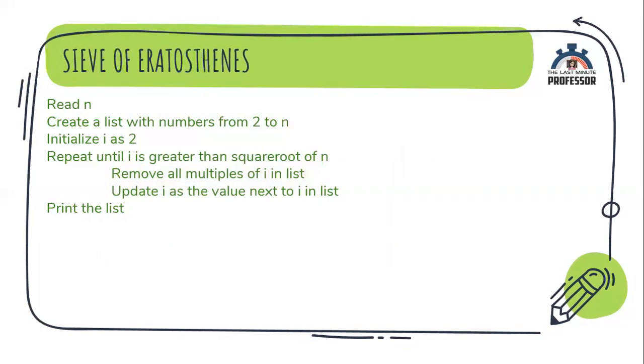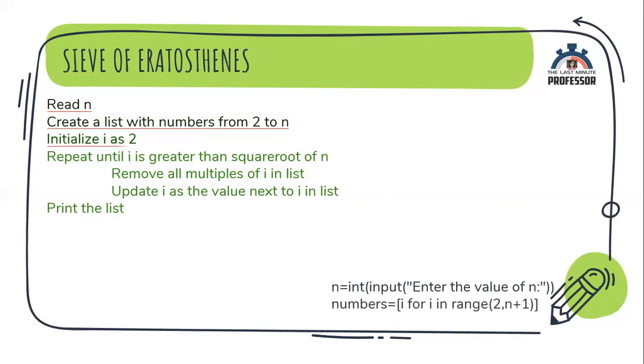Let us code this in Python. How to read the value of n? n is equal to int of input of, enter the value of n. Now, create a list with numbers from 2 to n. We can do it using list comprehension like this. Then, for doing this process, we are going to define a function called primes. I am passing i there as an argument and numbers is the list that we created. n is the user input.